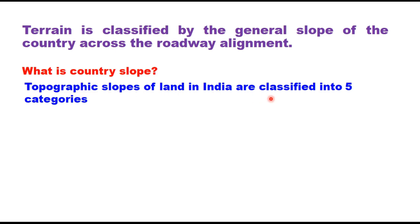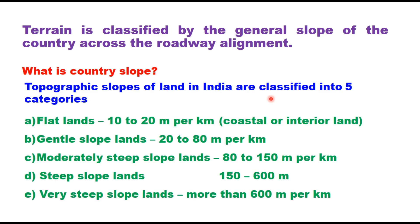The topographic slopes of land in India are classified into five categories given by the Survey of India. These categories are: flatlands with a slope of 10 to 20 meter per kilometer (with two sub-categories: coastal flatland and interior flatland), gentle slope lands at 20 to 80 meter per kilometer, moderately steep slope lands at 80 to 150 meter per kilometer, steep slope lands at 150 to 600 meter per kilometer, and very steep slope lands with a slope of more than 600 meter per kilometer.